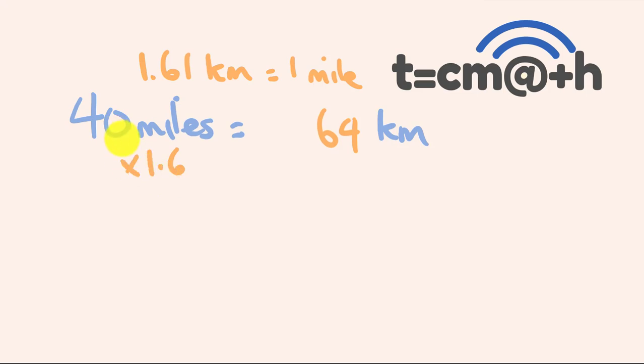Because 40 times 1 is going to be 40, that's the first part of our answer. And to that we're just going to add whatever 40 times 0.6 is. This is the same as 6 times 4. So 6 fours are 24.